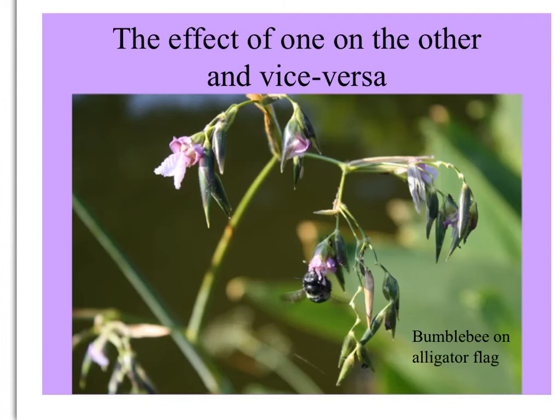So how can we model mutualisms? We need to consider the effect of one species on the other and vice versa. Here we can see a bumblebee pollinating flowers of the alligator flag. These have a cool mechanism that grabs the bee around the neck and in wriggling out it gets pollen on itself and transfers pollen to the stigma.